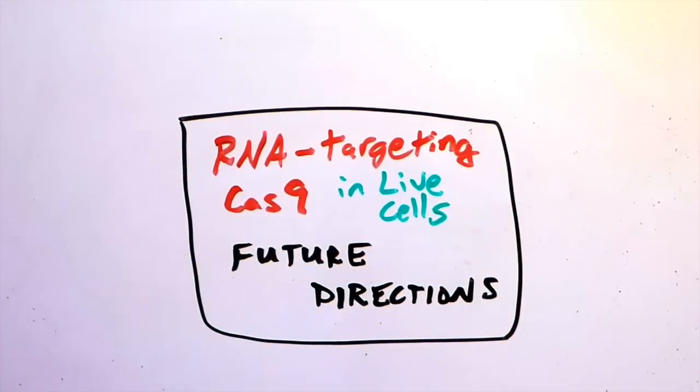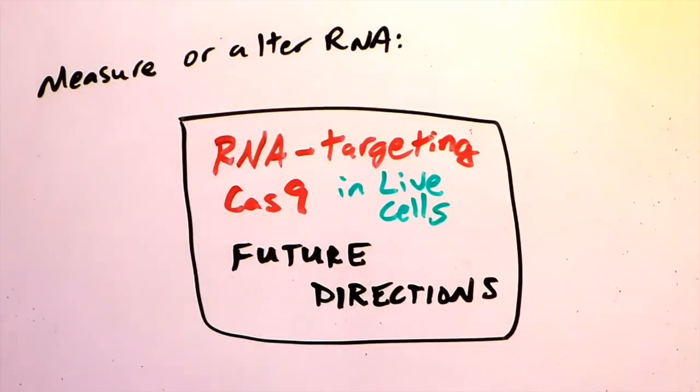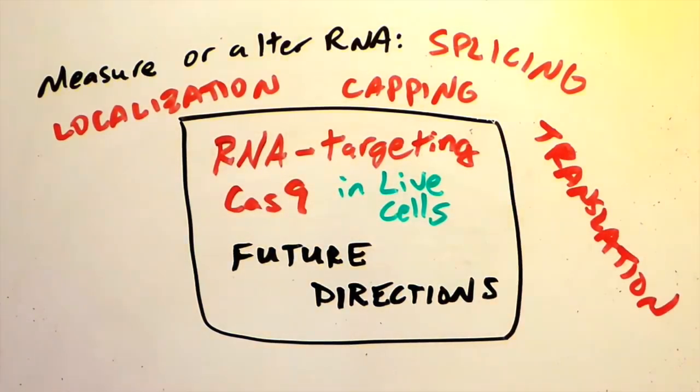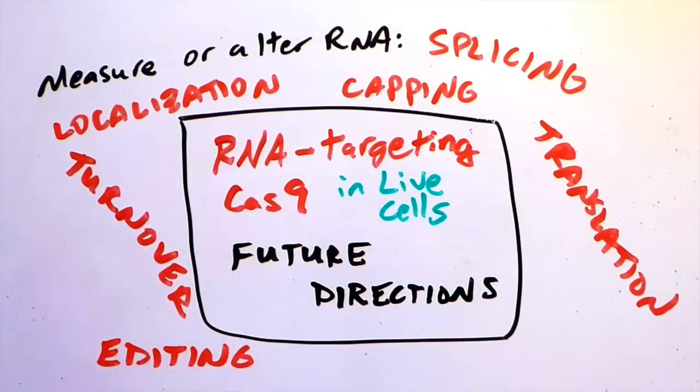Beyond tracking RNA localization in live cells, RNA-targeting Cas9 could be used to measure or alter other features of RNA processing, including splicing, localization, capping, translation, turnover, editing, or covalent modification of RNA.